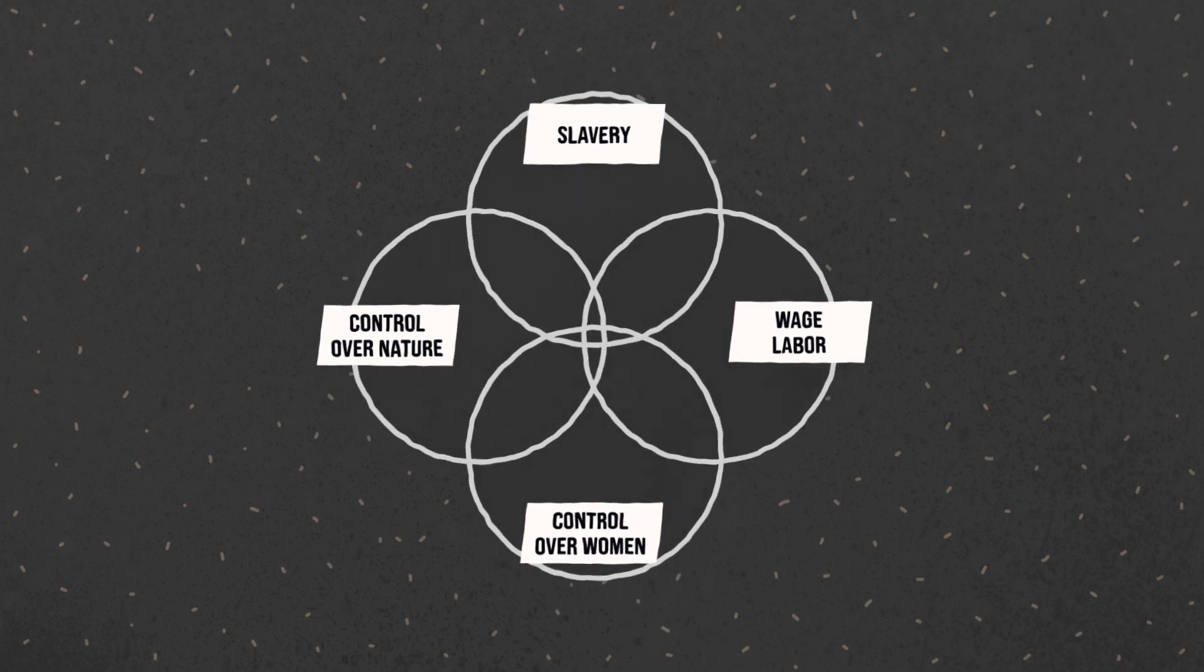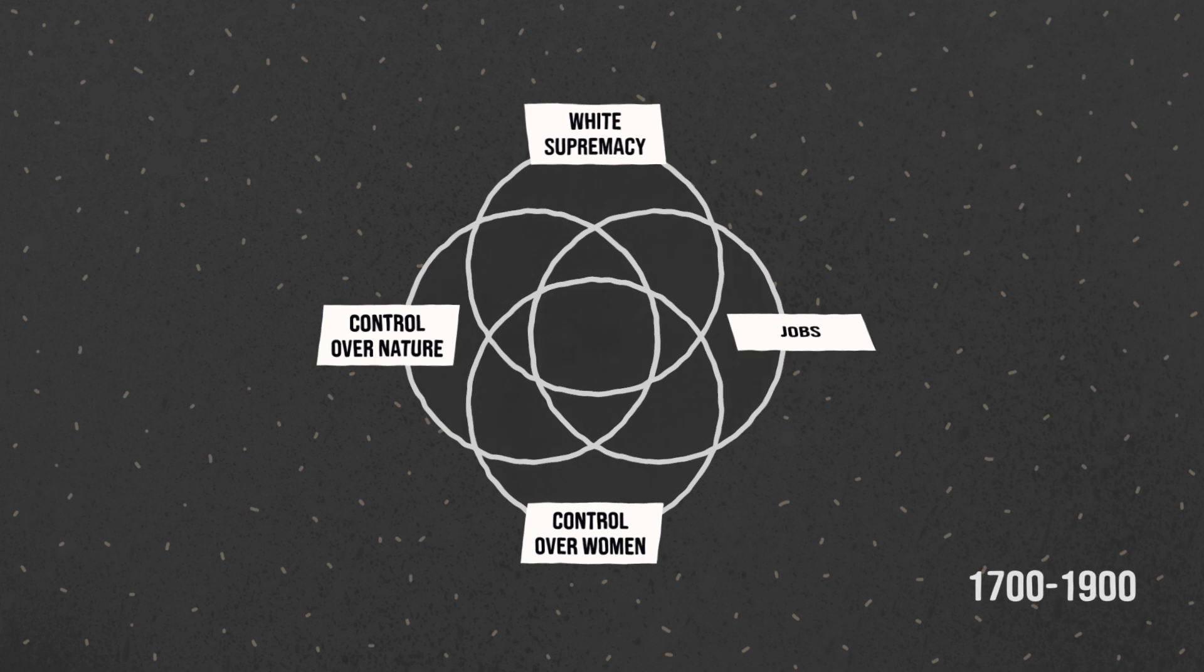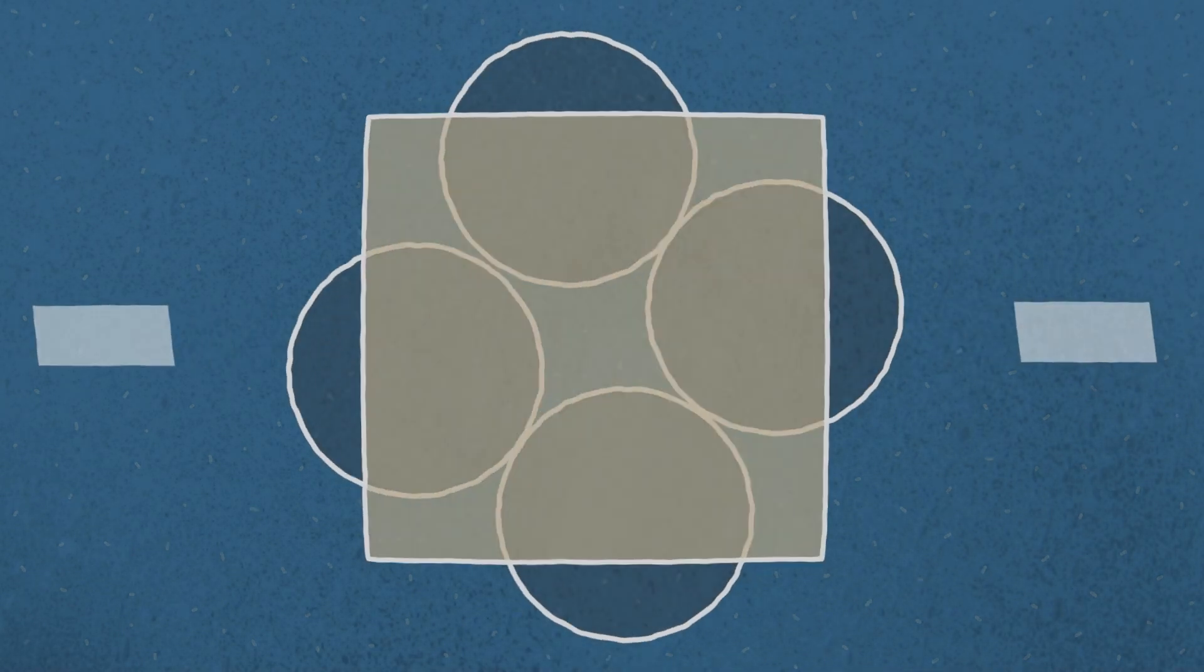They gradually transformed into white supremacy, jobs, women's work, and progress. From these relationships, something much bigger emerged: a system of patriarchal racial capitalism.